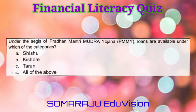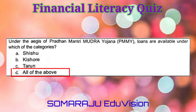Question number twelve: Under the aegis of Pradhan Mantri Mudra Yojana (PMMY), loans are available under which of the categories? A. Shishu, B. Kishore, C. Tarun, D. All of the above. The correct answer is D. All of the above.